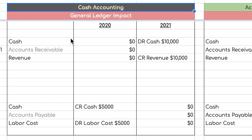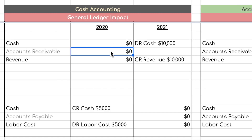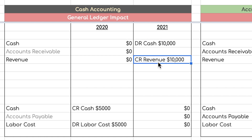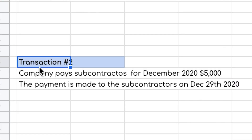Under cash accounting, there is nothing to record in 2020 for this transaction because no cash was received — cash accounting is based solely on cash received and cash spent. Then in 2021, when the cash is received, you debit Cash for $10,000 and credit Revenue for $10,000. That's how transaction one is recorded under the cash accounting method.